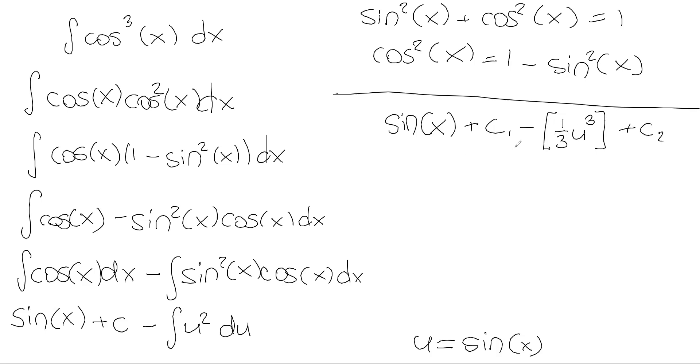So we have two constants of integration, one for each integral, but we could combine them into just one constant. One third u to the third power, u is sine of x. So this would be sine cubed of x. We get 1/3 sine cubed of x. And then we combine the constants, getting us just this. And we're finished with this one. Wasn't too bad. Now let's try one more problem.